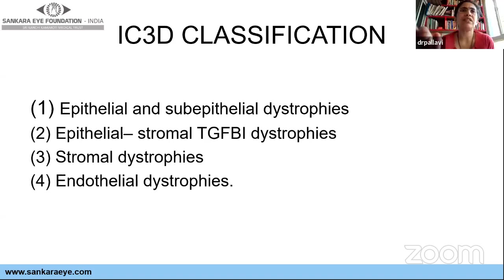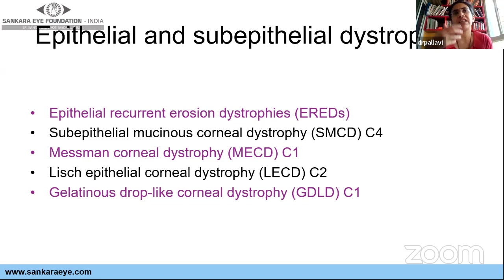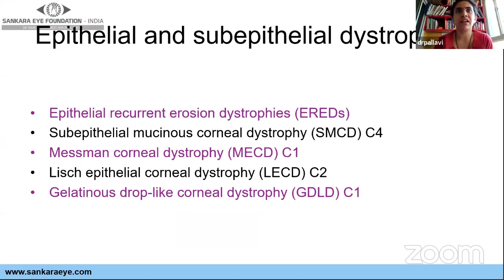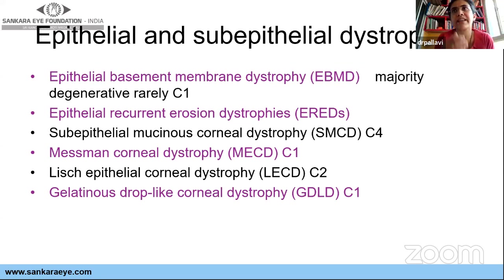Coming to epithelial and sub-epithelial dystrophies, these include epithelial recurrent erosion dystrophies, mucinous dystrophies — the commonest being mucinous corneal dystrophy and gelatinous drop-like dystrophy. But the most common one I'll discuss first is epithelial basement membrane dystrophy, which is actually considered degenerative in nature and very rarely a true dystrophy.